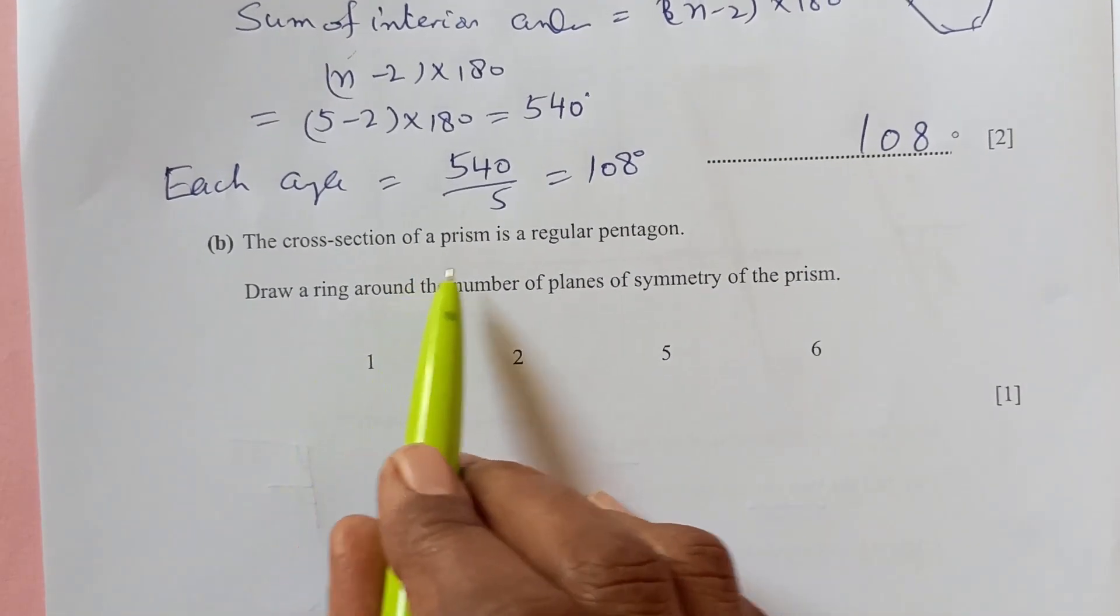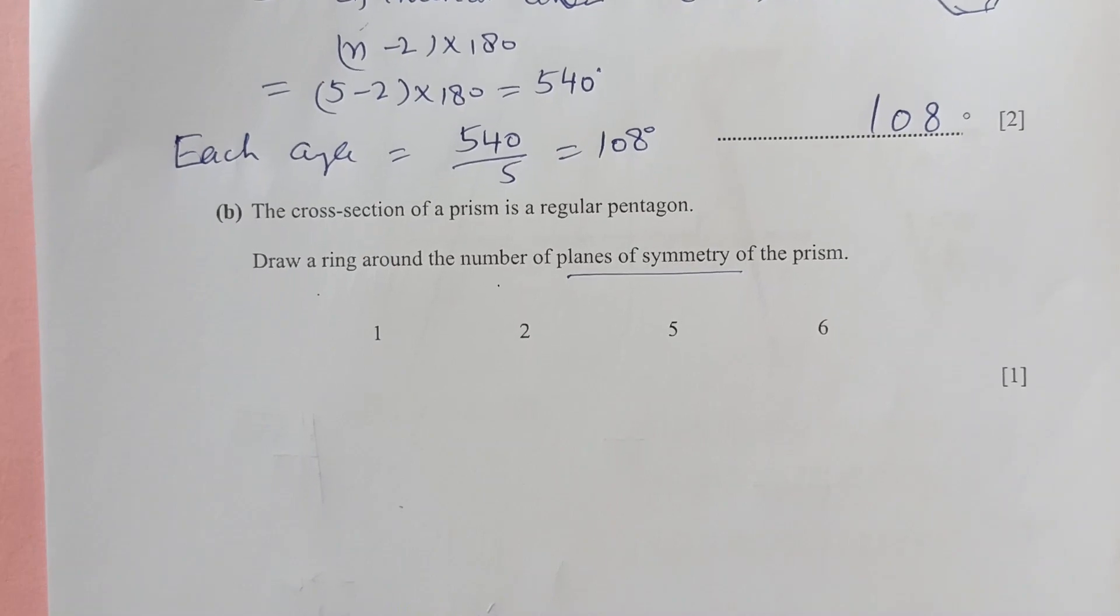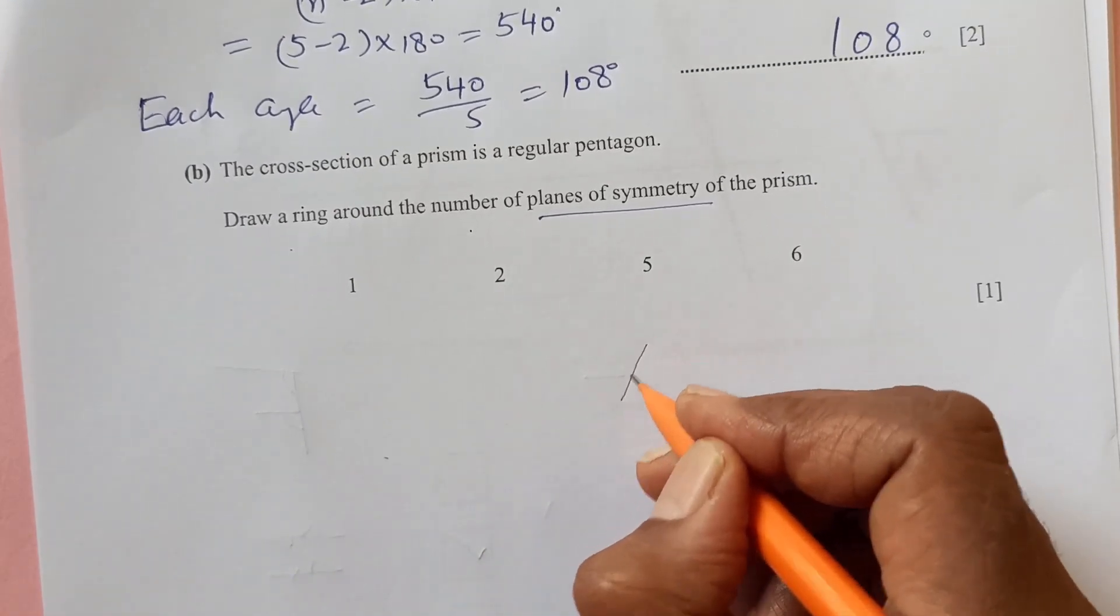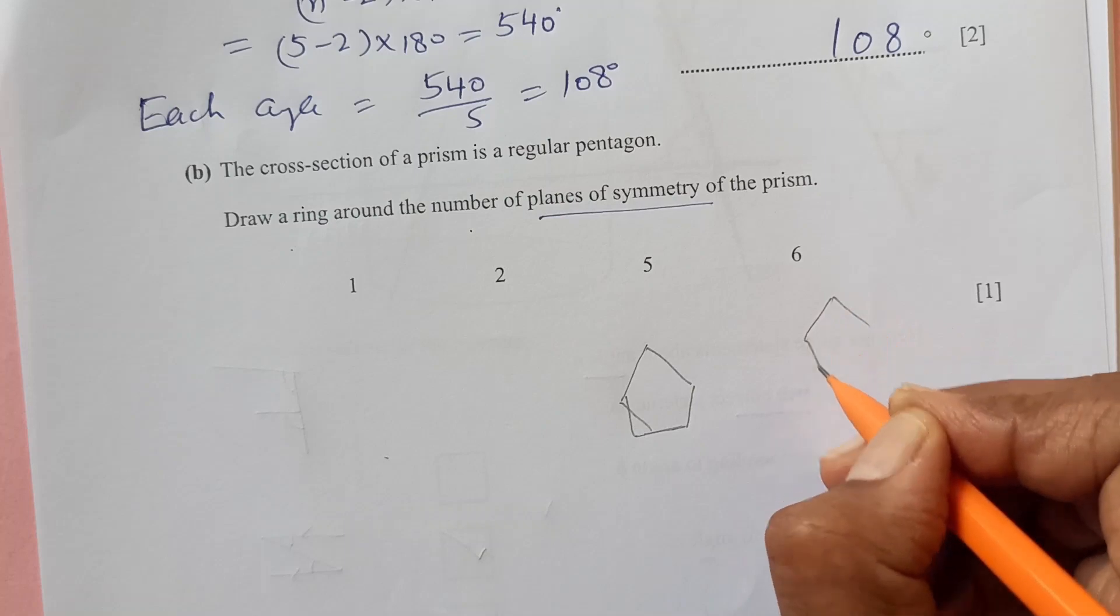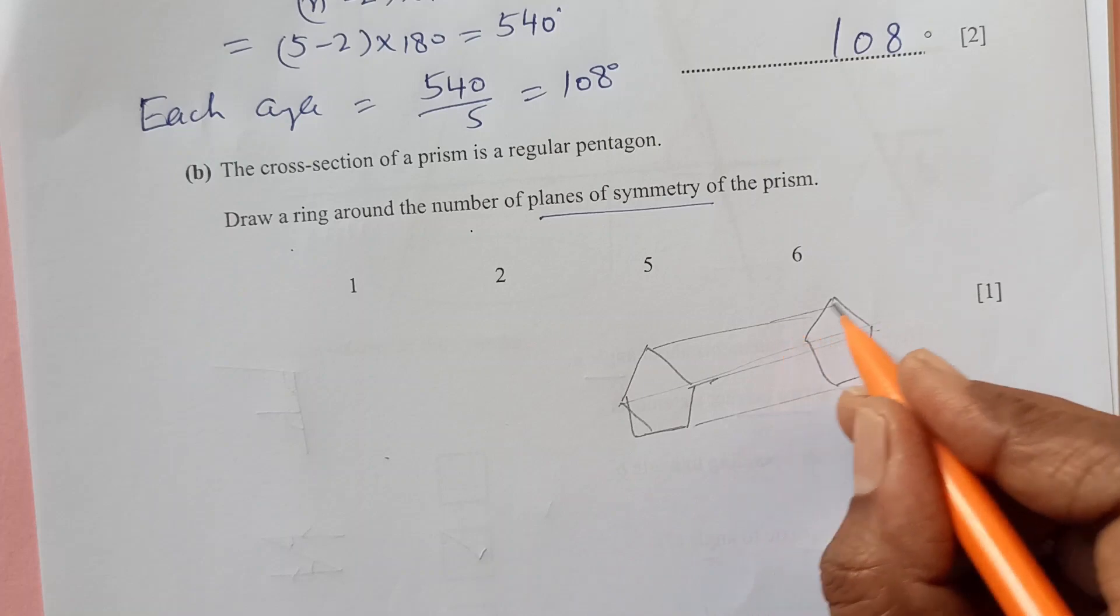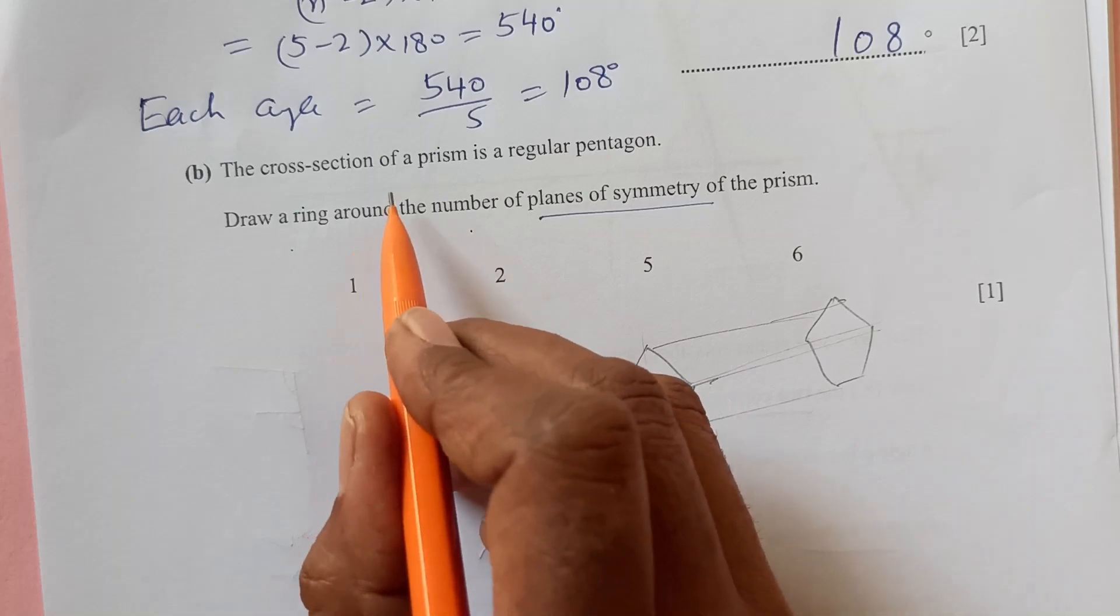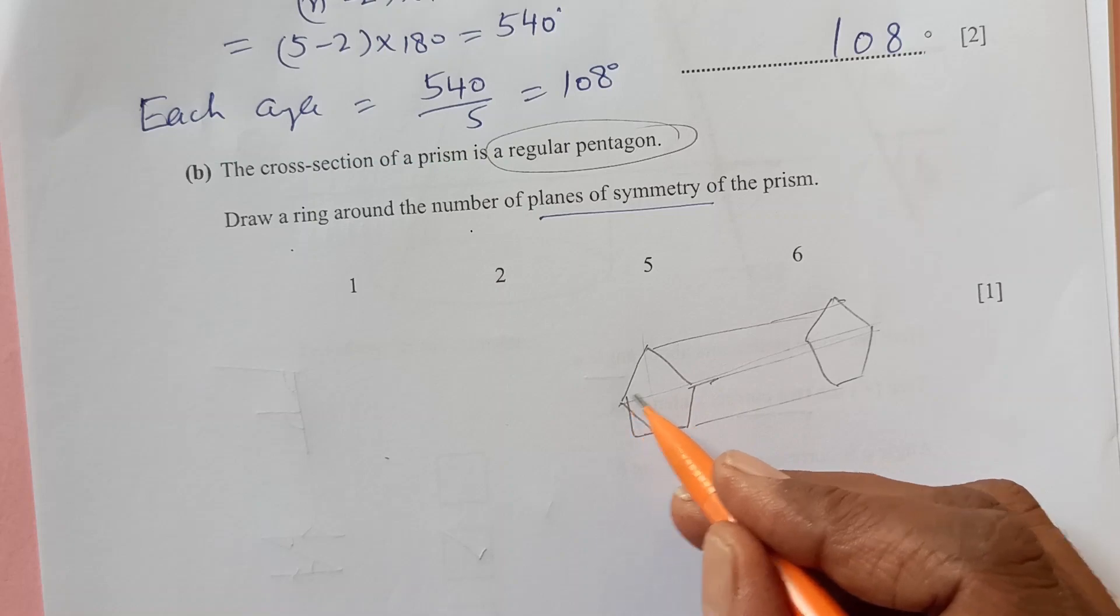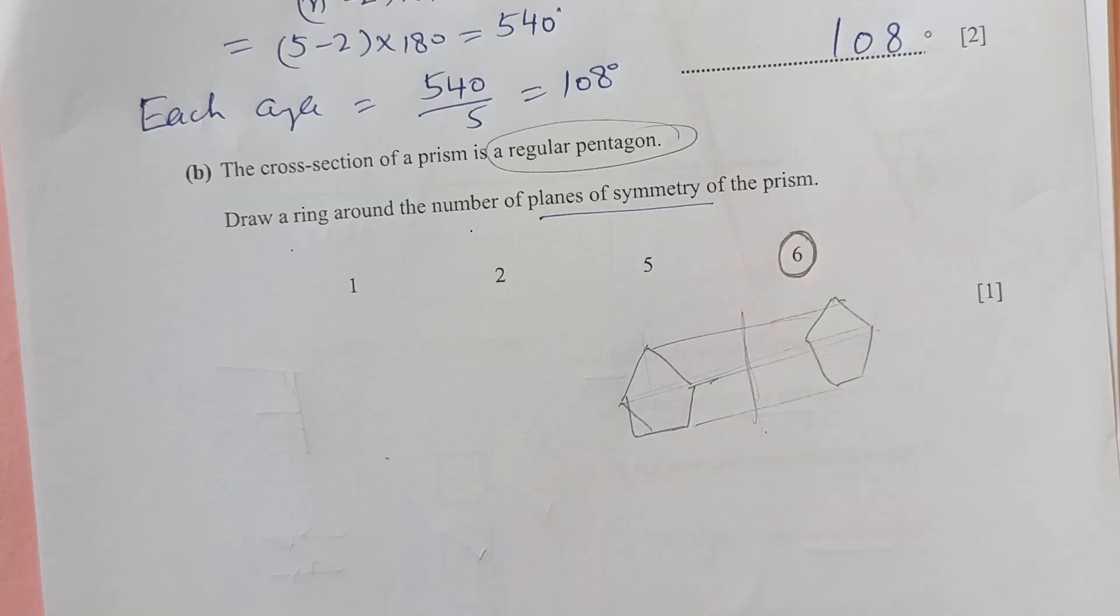The cross section of the prism is a regular pentagon. Draw a ring around the number of planes of symmetry of the prism. For the pentagonal prism, it is something like this. Let me draw a rough diagram here. For pentagon, there are five sides. And it is a regular pentagon. For the regular pentagon, all the sides are equal. So, there will be five planes of symmetry and plus one this. So, that means total will be six planes of symmetry.